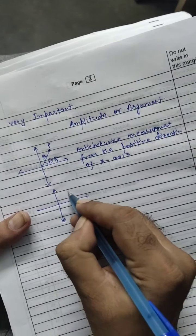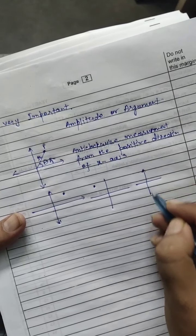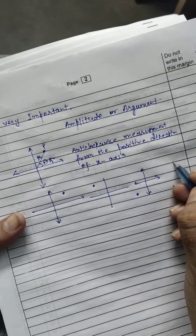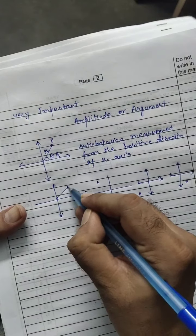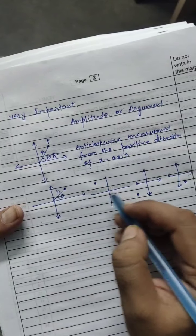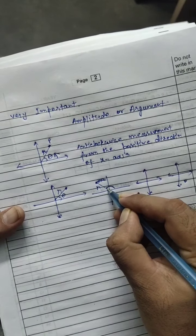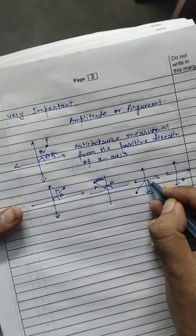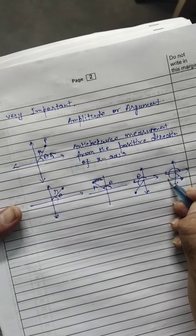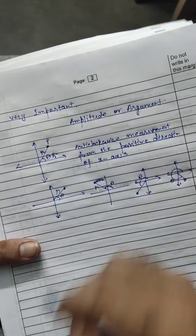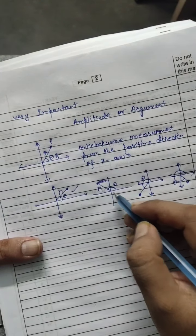If our complex number lies on the first quadrant, and if it lies on the second quadrant, the third, and the last one is the fourth — in this way. Here, of course, this is your modulus r, and theta is in the anti-clockwise direction. This angle is theta, and for the third quadrant it is again theta, and for the last one also theta.